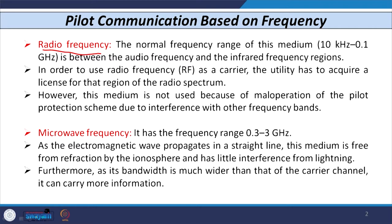When we use radio frequency, the normal frequency range is from 10 kilohertz to 0.1 gigahertz. When we use such a scheme, the utility has to acquire a separate license and a separate band for that frequency range for transmission of signal. However, this type of medium is not used because of mal-operation of the pilot relay due to interference with some other frequency band.